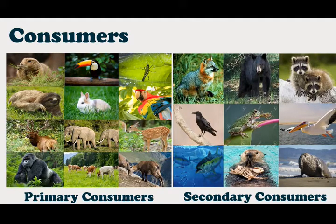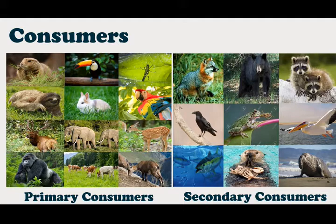Secondary consumers are carnivores and omnivore animals. Carnivores are flesh-eating animals and omnivores are animals that consume both herbivores as well as plants. Examples of secondary consumers are sparrow, fox, crow, wolf, dog, cat, snake, and others. In the slide you can also see large fishes, the elephant seal, the otter, the falcon and the bear — all examples of secondary consumers.